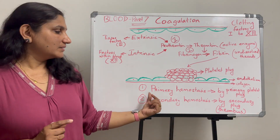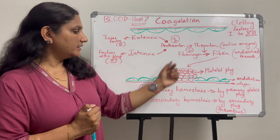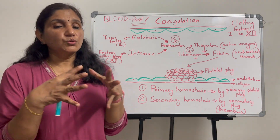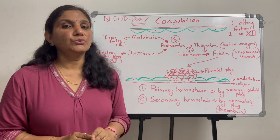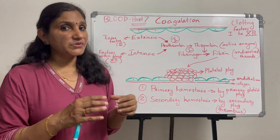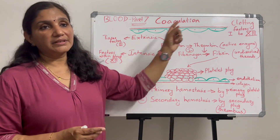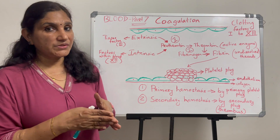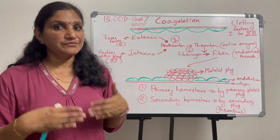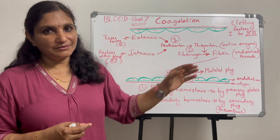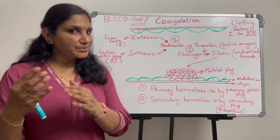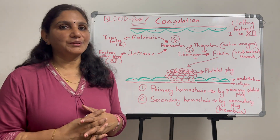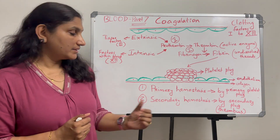So there are two phases of hemostasis. The primary phase of hemostasis involves platelet plug formation — temporary bleeding control. The secondary hemostasis involves coagulation, which occurs through intrinsic or extrinsic pathways. The coagulation factors activate the final conversion of fibrinogen to fibrin threads, forming a permanent stable platelet plug. This is called secondary hemostasis.